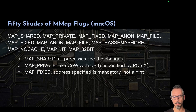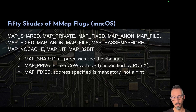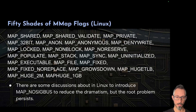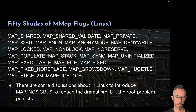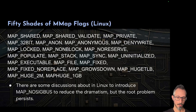On Linux there are many more flags: MAP_SHARED, MAP_VALIDATE, MAP_32BIT, MAP_ANON, MAP_ANONYMOUS (a deprecated version), MAP_NONBLOCK, MAP_NORESERVE, MAP_FILE, MAP_FIXED, etc. It's really overcomplicated. There are also ongoing discussions about how that should work, including a proposal for MAP_NOSIGBUS.